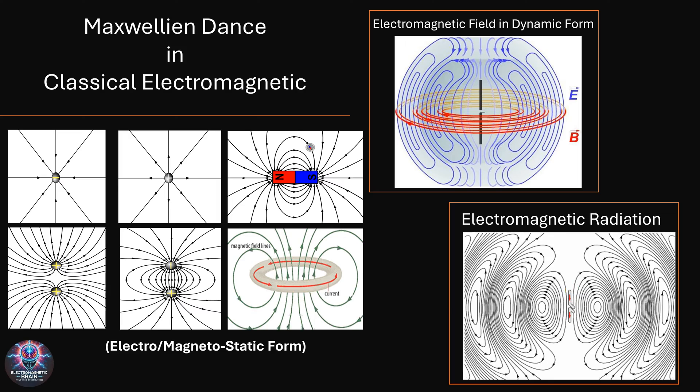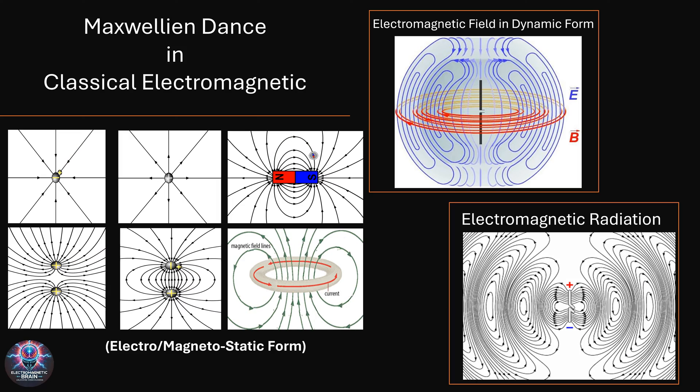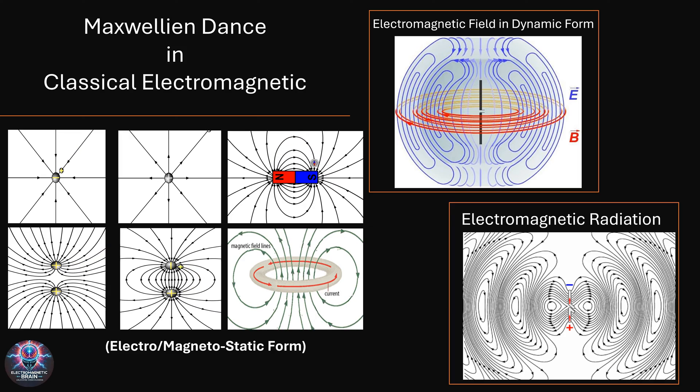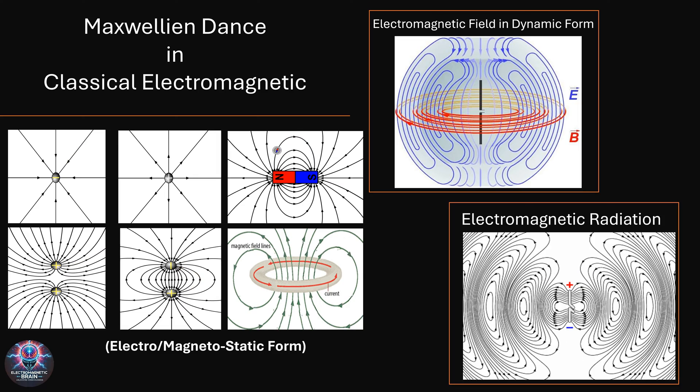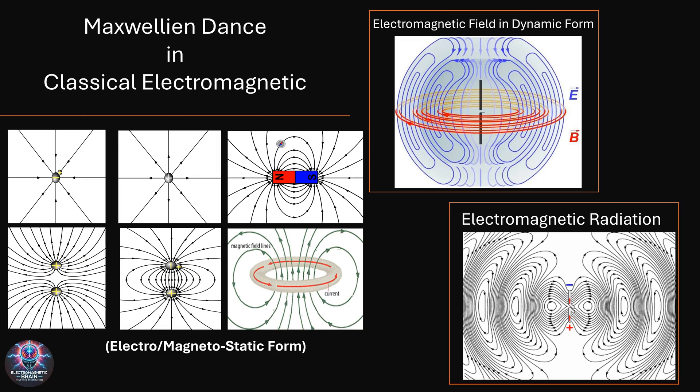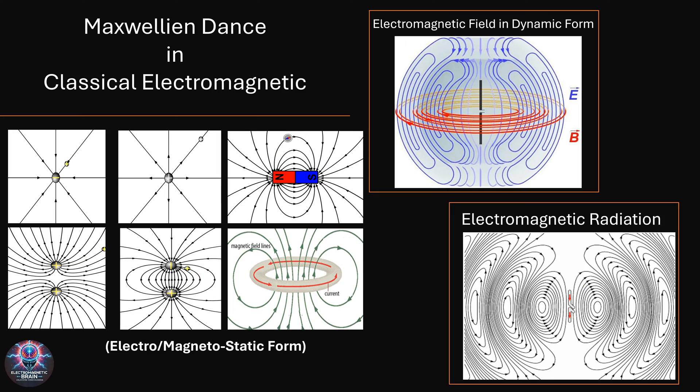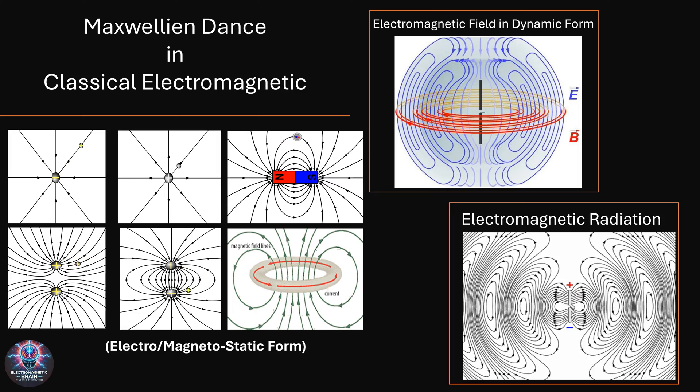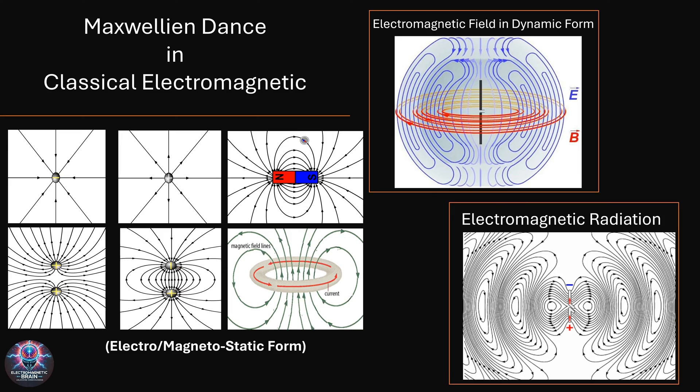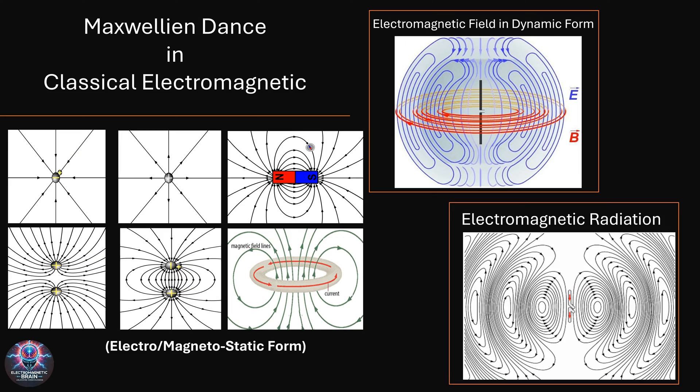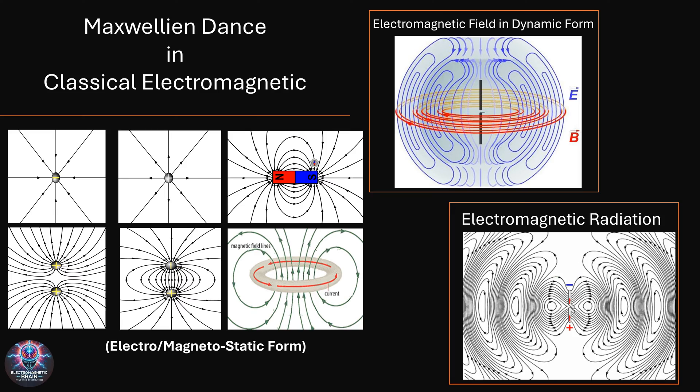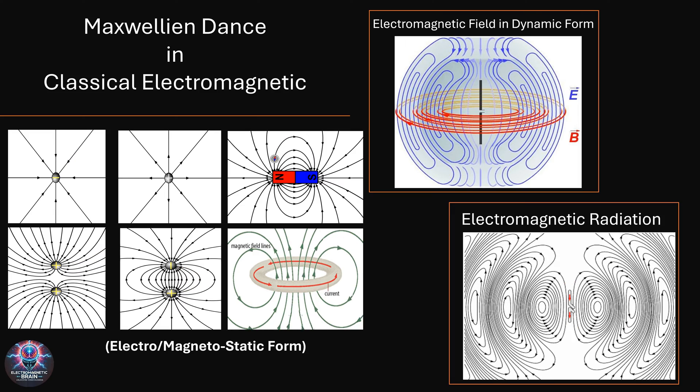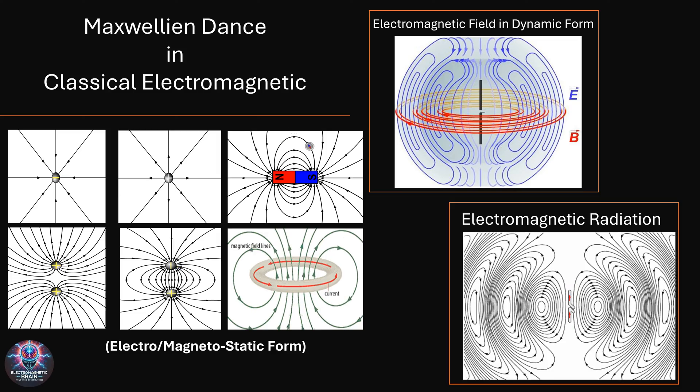In fact, Maxwell's realization led to the prediction of electromagnetic waves, waves of oscillating electric and magnetic fields that could travel through space. These waves, Maxwell calculated, moved at a speed remarkably close to the known speed of light. This was no coincidence. Maxwell had discovered that light itself was an electromagnetic wave. This profound insight connected physics to optics, revealing that visible light, radio waves, and x-rays were all part of the same fundamental phenomenon.